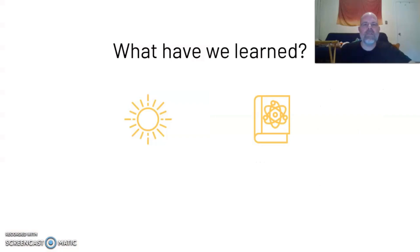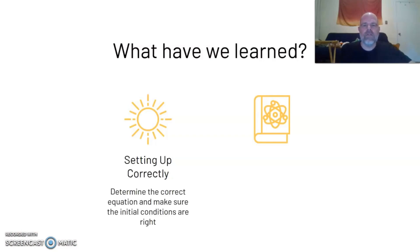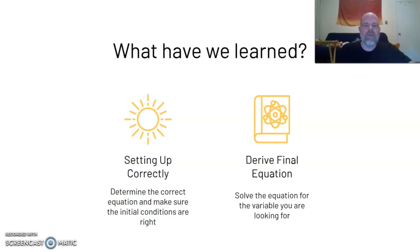So what did we learn in this lesson? We learned how to set up a problem correctly — determining the correct equation and making sure initial conditions are correct. And we learned how to derive the final equation, which means solving the equation for the variable you are looking for. Thanks everybody.